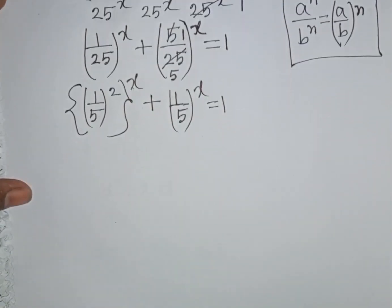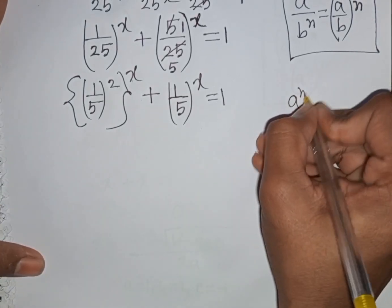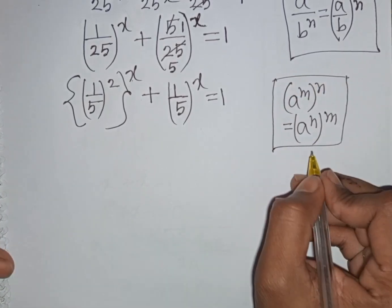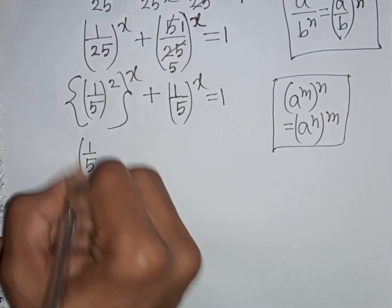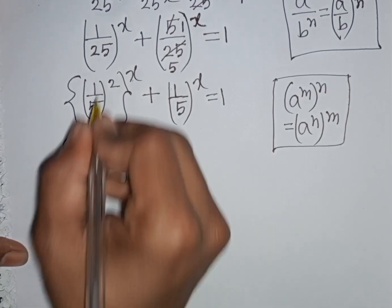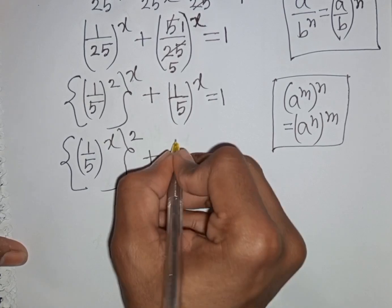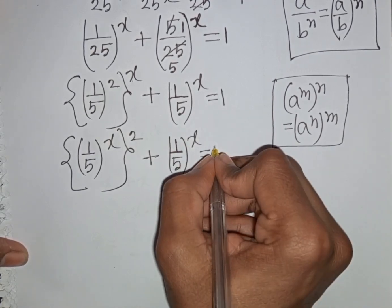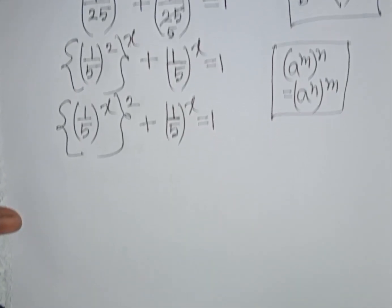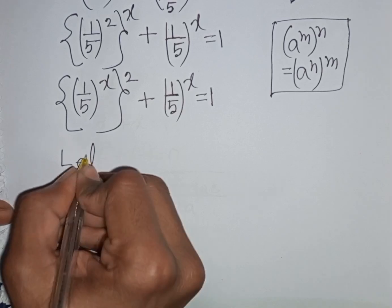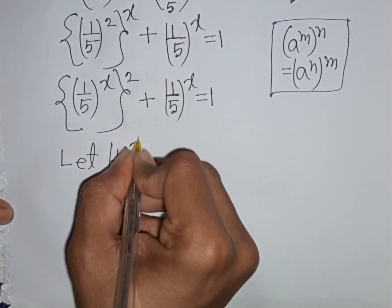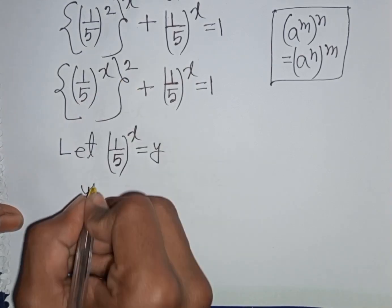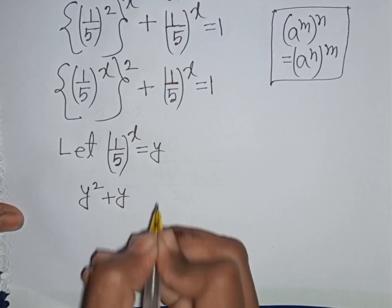We apply the rule (a^m)^n = a^(m·n). So (1/5)^(2x) can be written as [(1/5)^x]^2. We notice that (1/5)^x appears in both terms, so let y = (1/5)^x. Our equation becomes y squared plus y equals 1.